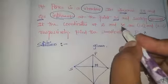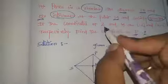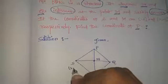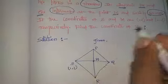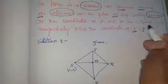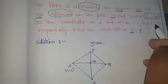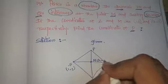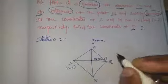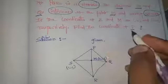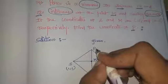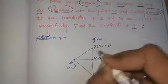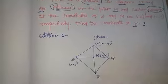The S and M coordinates are given. S point is (1,1). M point is also given in the question: (2,-1). And P point is denoted as (x1, y1).